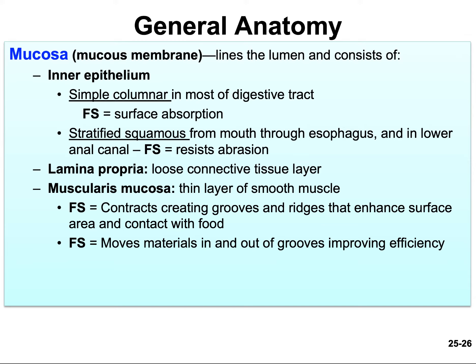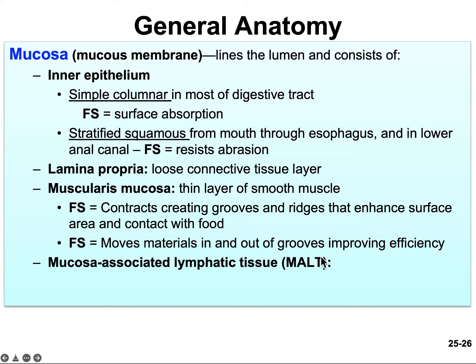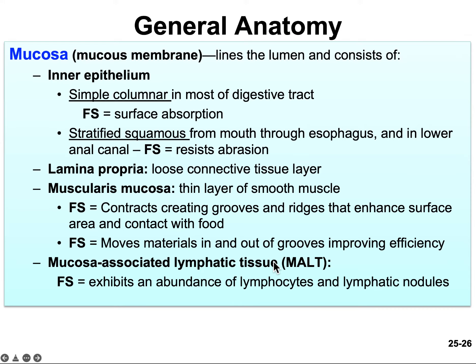Also associated with the mucosa is MALT — mucosa-associated lymphatic tissue. This acronym can be misleading. The lymphatic system invades into the mucosa because it's important that our immune system is patrolling what we've ingested. There can be all kinds of microbes on food or anything we swallow that makes its way into our digestive tract.